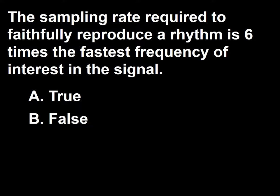Next question: The sampling rate required to faithfully reproduce a rhythm is six times the fastest frequency of interest in the signal. A, true; B, false.